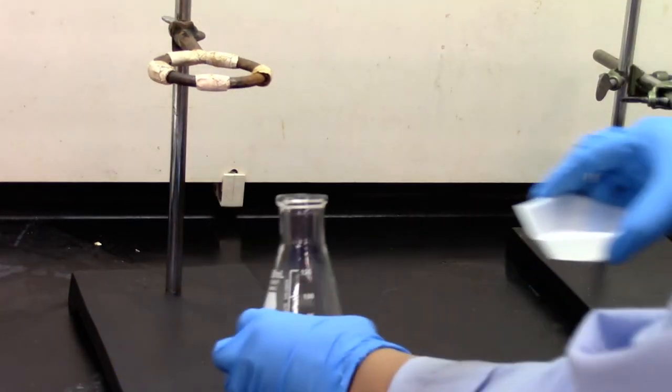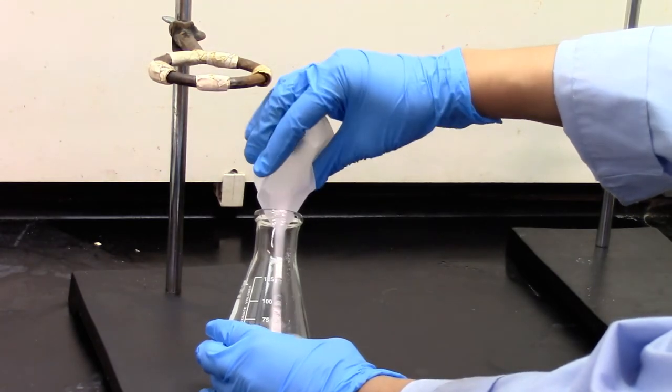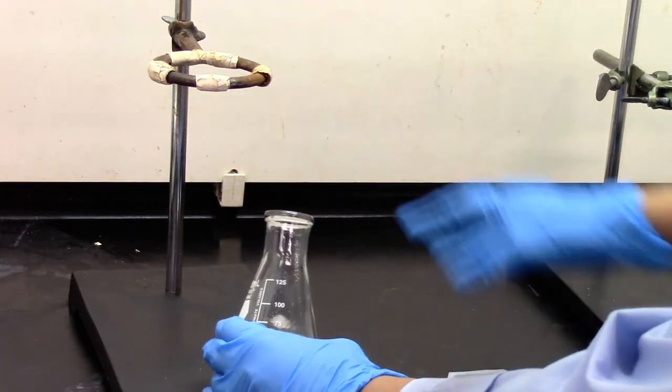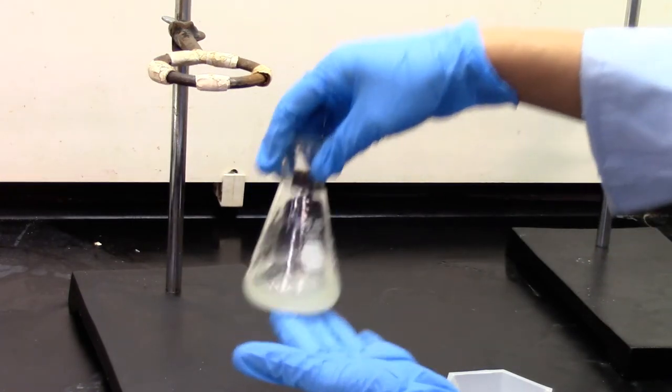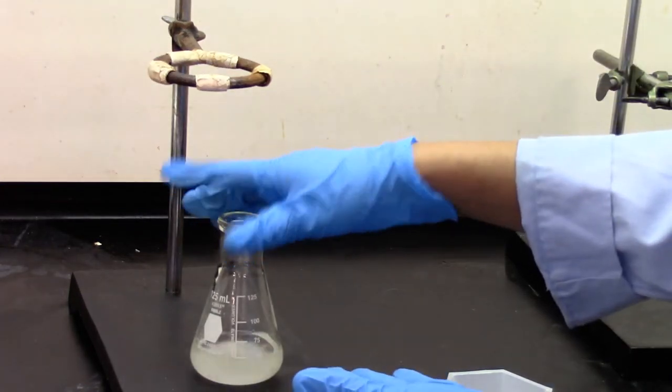To the dichloromethane layer, I'm going to add about 2 grams of sodium sulfate, anhydrous sodium sulfate. And then give it a mix. Let it stand for a few minutes.